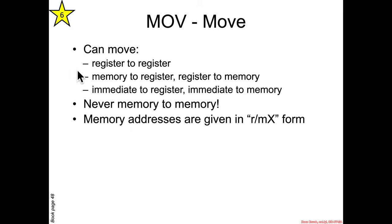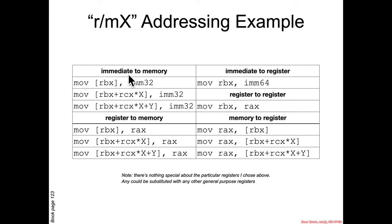The MOV instruction has many different forms. It can move from one register to another register, take memory and put it into a register, take a register and put it into memory, or take an immediate value and put it into a register or memory. The form you don't see is memory-to-memory — MOV does not support memory-to-memory transfers. Memory addresses are always given in RMX forms, and Intel cannot support 64-bit immediate values when moving into memory, but it can when moving into a register.